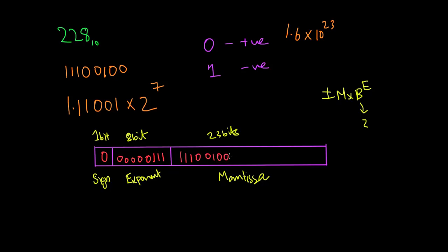32 bits represent one floating point number in this format. This is the first version, and we will optimize it to use fewer memory bits and better memory storage.